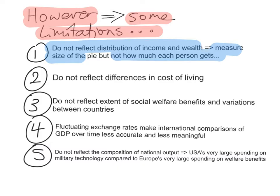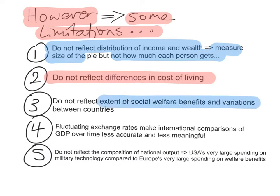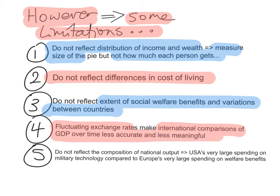National income statistics do not reflect differences in the cost of living, so comparing between countries is not necessarily accurate. If one country has a much lower real GDP per capita than another but a much lower cost of living, then it's not so bad. They also do not reflect the extent of social welfare benefits and variations between countries. And because of fluctuating exchange rates, it's hard to make international comparisons of GDP over time, making them less accurate and less meaningful.